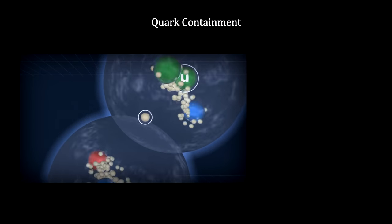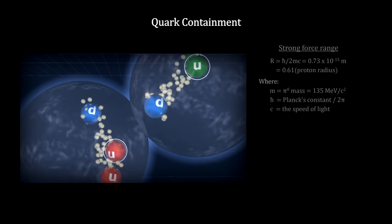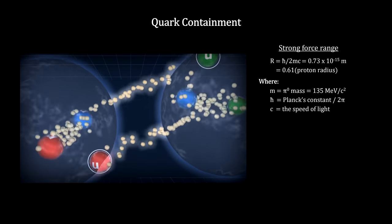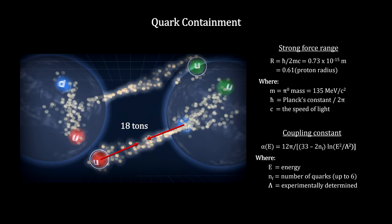As the distance between quarks grows to the diameter of a proton, the strength of the force approaches 18 tons. Imagine 18 tons focused on such a tiny spot. This makes it virtually impossible to separate quarks.